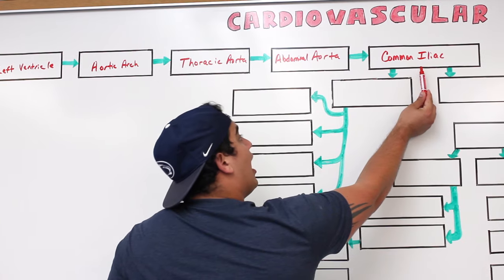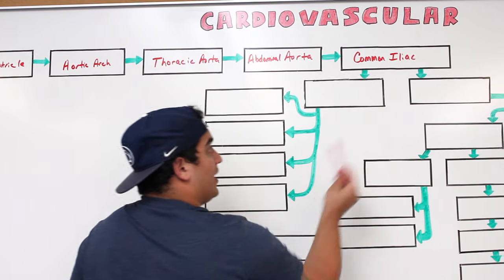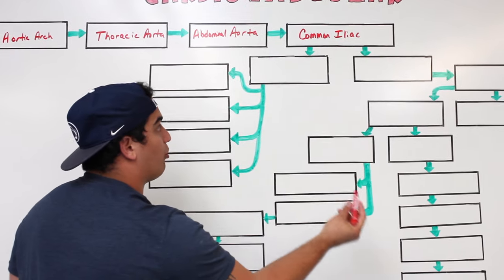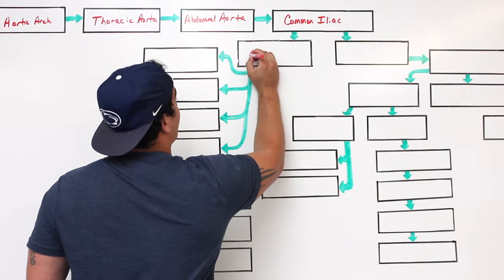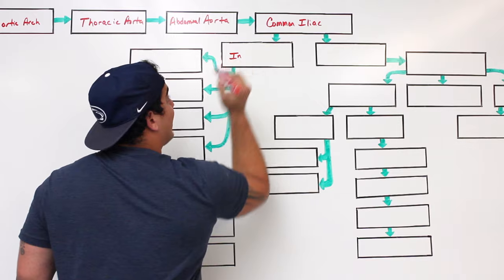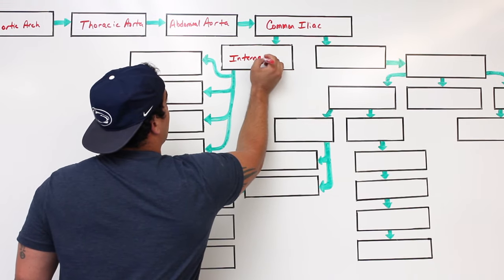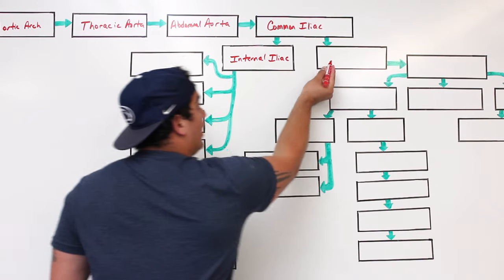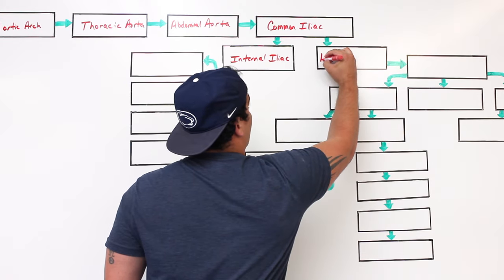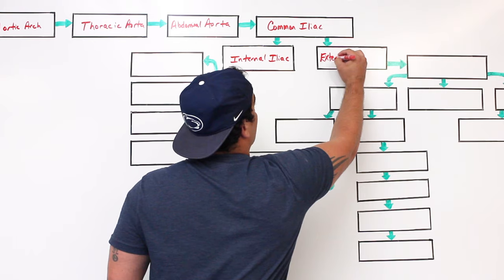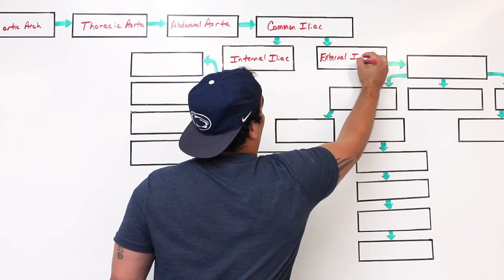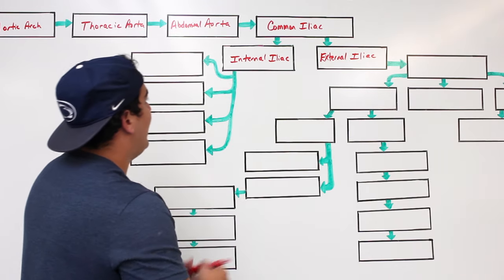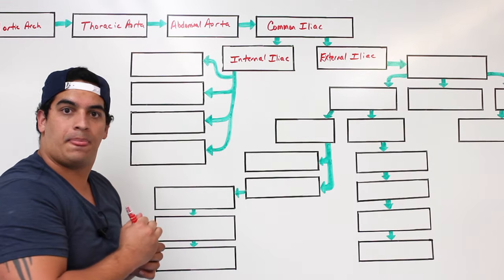The common iliac artery bifurcates — it splits into two branches. One is an internal branch called the internal iliac artery, and the other is an external branch called the external iliac artery.